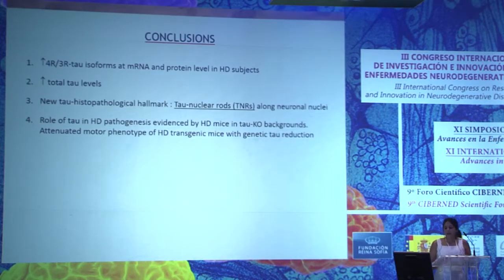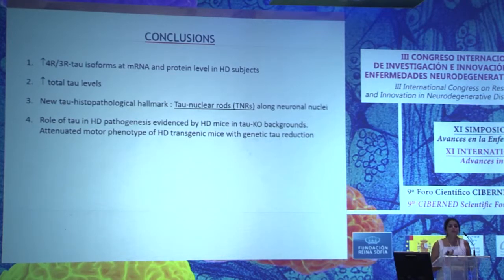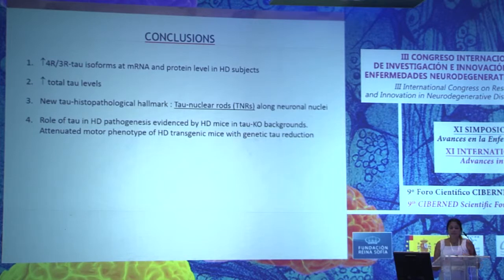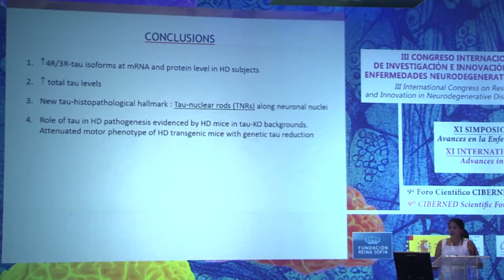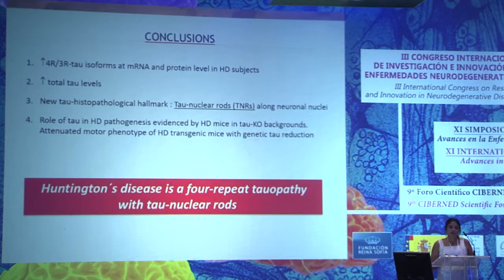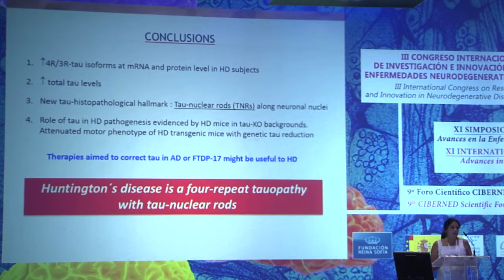In conclusion, we have seen an increase in the 4R/3R tau ratio at both RNA and protein level in patients, as well as an increase in total tau as in other dementias. We have described a new tau histopathological hallmark — the tau nuclear rods. We have shown that tau contributes to the disease, since reducing total tau levels attenuates the motor phenotype in HD mice. Therefore, Huntington's disease is a 4-repeat tauopathy with tau nuclear rods, and therapies under development to correct tau pathology in Alzheimer's disease or frontotemporal dementia may also be useful for Huntington's disease.